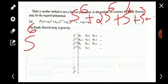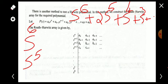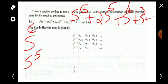So for the second row we write s^(n-1), and in that row we write the coefficient of s^(n-1) first — that is a_(n-1) — then the alternate coefficients a_(n-3), a_(n-5), and so on. We continue constructing the array row by row down to s^0.